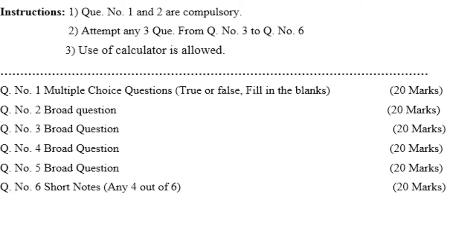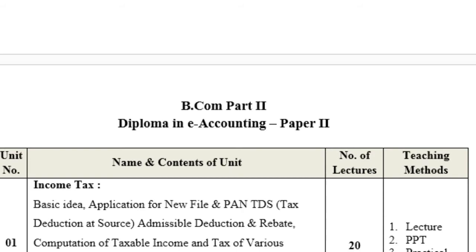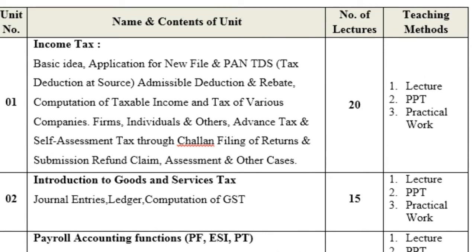Short notes: any 4 out of 6. In paper number 2, we are including income tax — that means the basic idea of income tax, application for new PAN, bad debts, deduction at source, admissible and inadmissible deductions, computation of taxable income, tax on various categories including individuals, and self-assessment tax, general filing of returns, submission of refund claims, assessments and other cases.